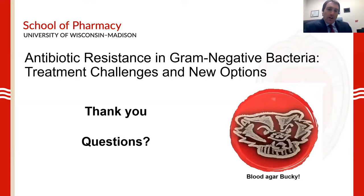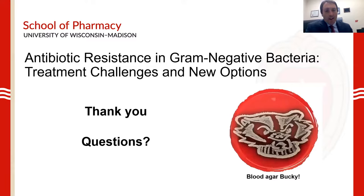Q: Is virulence also a big problem for gram-negative bacteria? The conventional wisdom is that when an organism becomes resistant, it gives up some virulence. However, in gram-negatives — particularly with Pseudomonas — that does not happen. They can actually become more virulent by taking on additional resistance genes. Additionally, there's a lot of crosstalk between microbes that leads to a high degree of virulence in these patients.